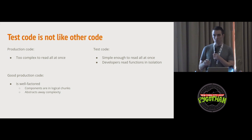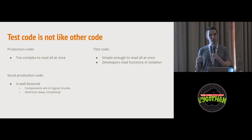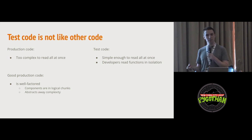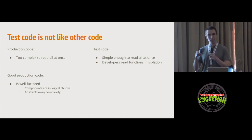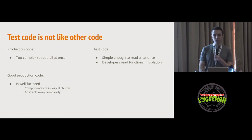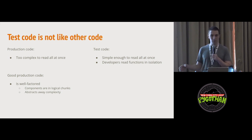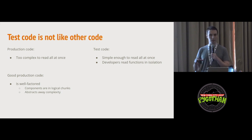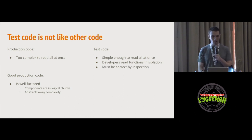Developers often read unit test functions in isolation. If you read a method in a production class, often you can't get away with just reading that method — it calls other functions, interacts with member variables. But if you've got 50 different unit test functions in a test suite, the developer reading it doesn't want to read all 50. They should be able to read just that one. If a test fails, they want to read just that function and figure out how to fix it.